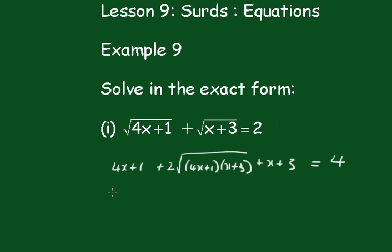Collecting like terms, we get 5x plus 4 plus 2√((4x+1)(x+3)) equals 4.